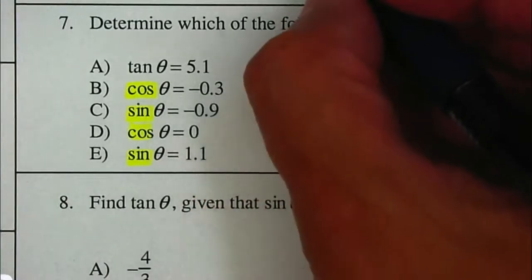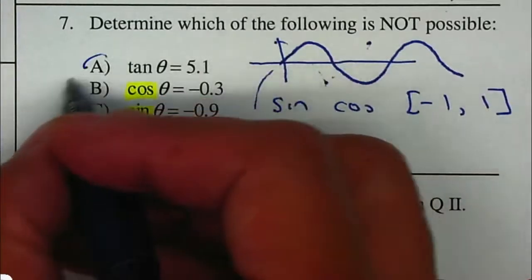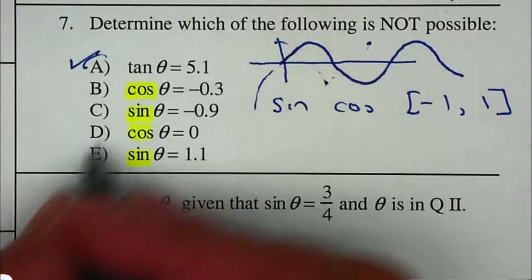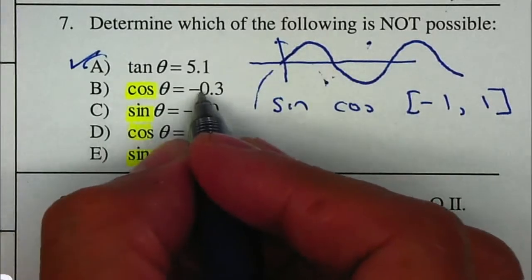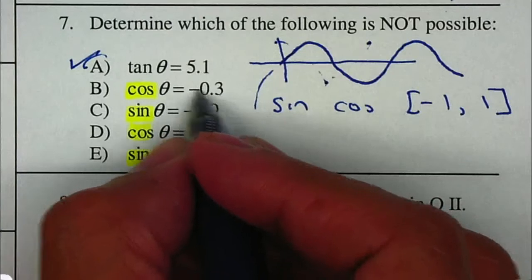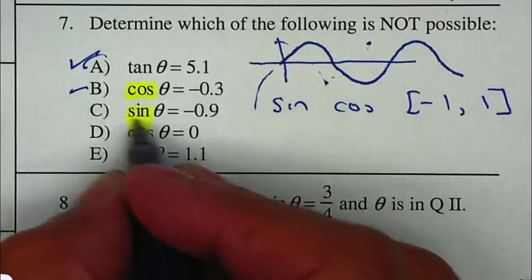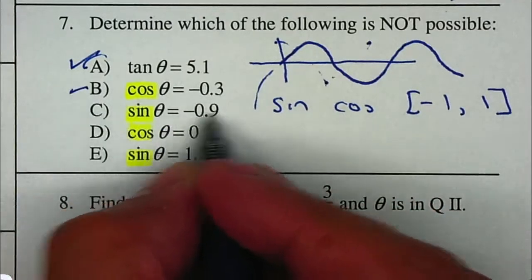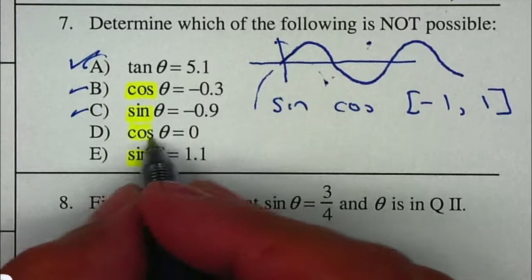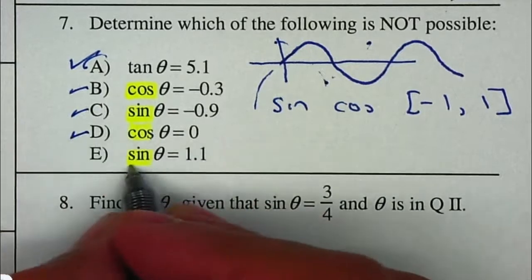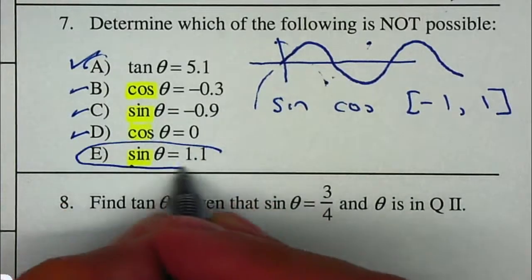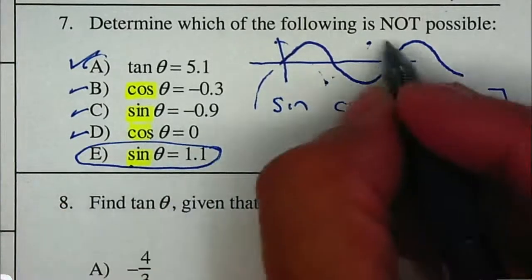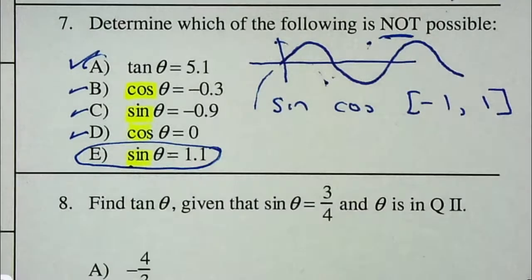So tangent is okay. Cosine can be negative 0.3, that one's fine. Sine can be negative 0.9, that's fine. Cosine can be 0, no problem. But sine cannot be greater than 1, so the one that's not possible is letter E.